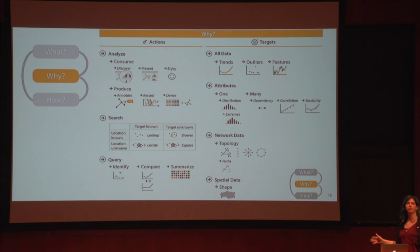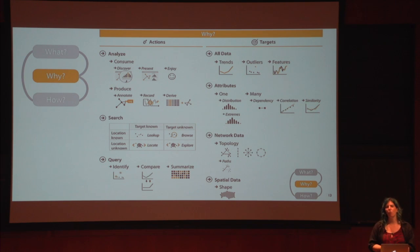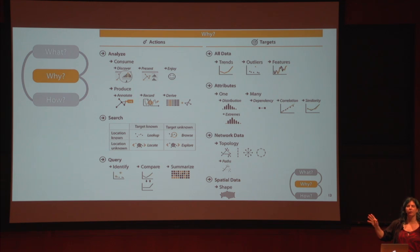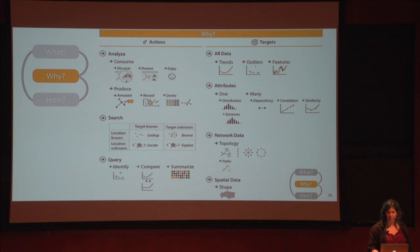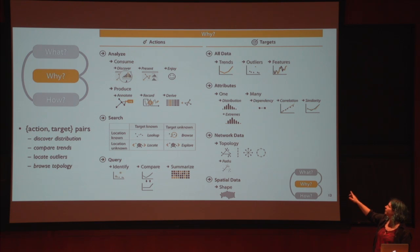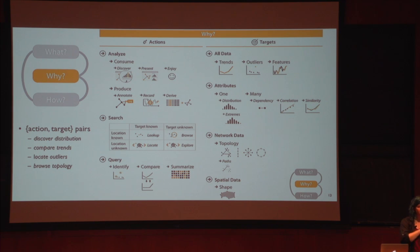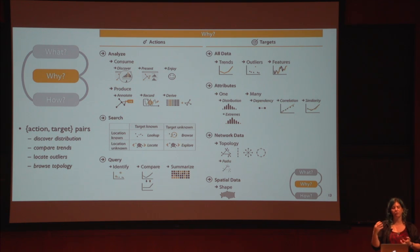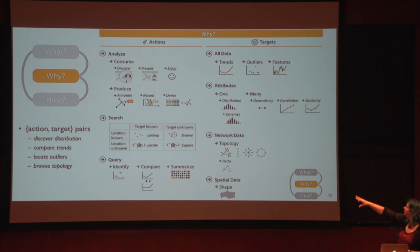Now let's think about why. Why would people be looking at a visual representation? I'm going to think about this abstractly without using domain-specific terms. I've got a column of actions and a column of targets. You'll see a lot of action-target pairs: discovering a distribution, comparing trends, locating outliers, browsing topology. There's this idea of some kind of verb and some kind of noun. Let's try to break down these verb-noun pairs.